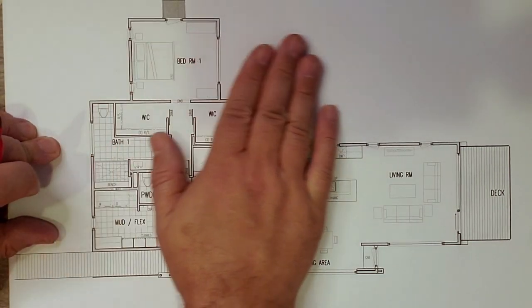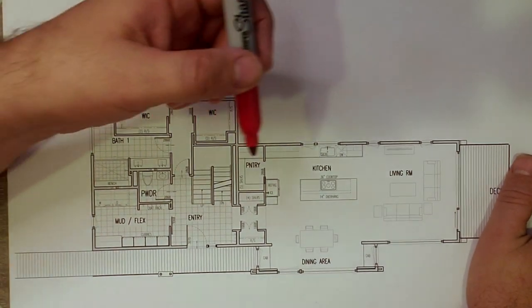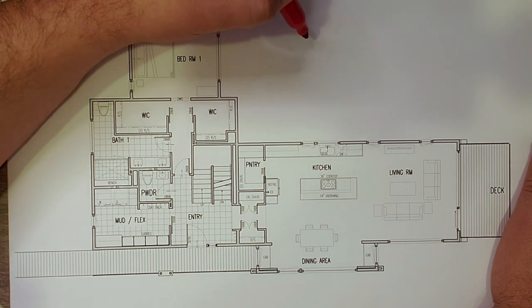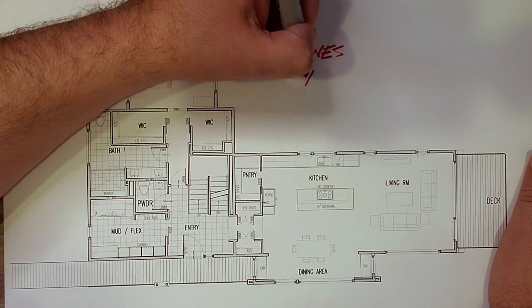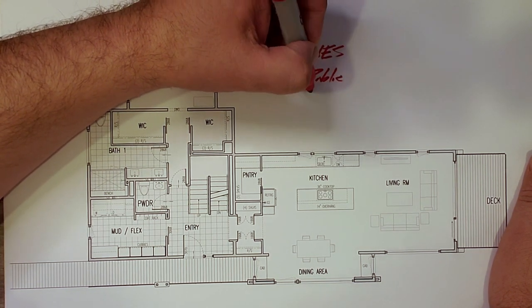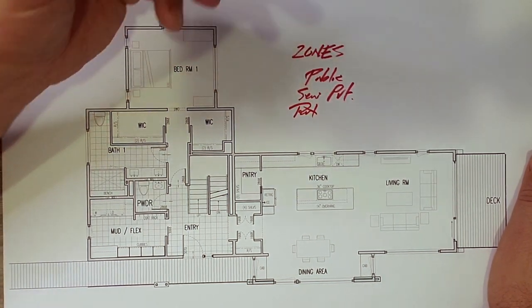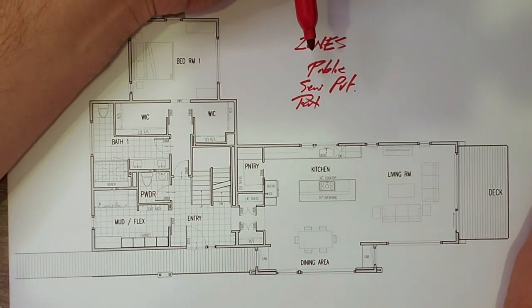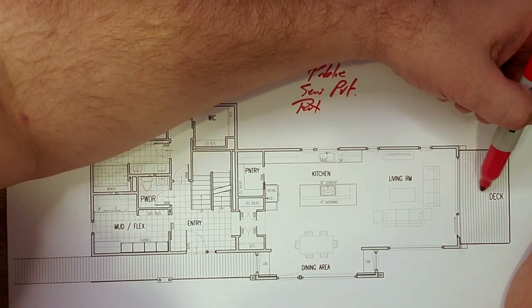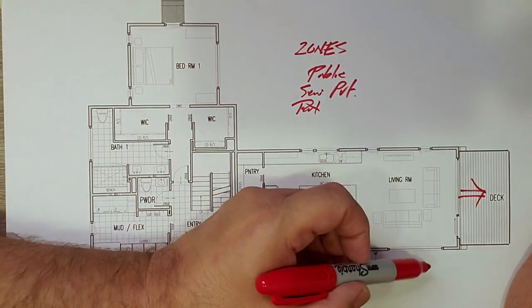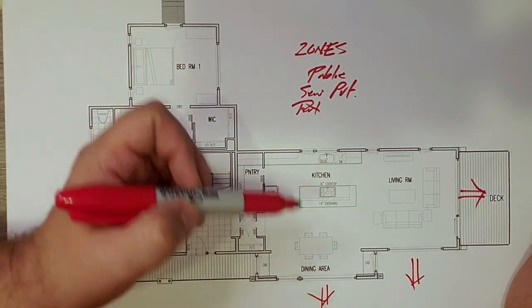Alright, so here we have the floor plan here, and you can see we've got Big Red in hand. When I first started thinking about the floor plans, I like to think of it as a series of zones. So there is the public zone, there is the semi-private zone, and there is the private zone. When we were talking about in the very first video, site planning and the party, remember we had a really nice view out that way. But we also had some decent views down the hill here.